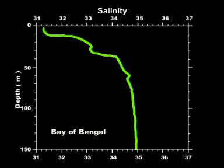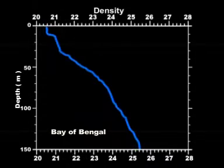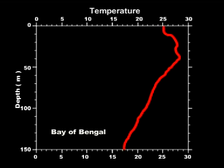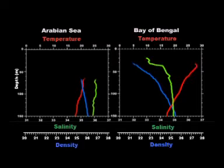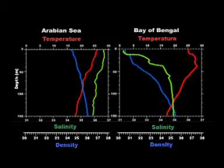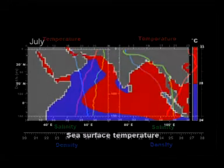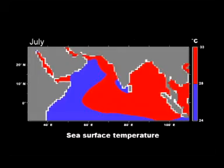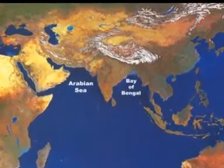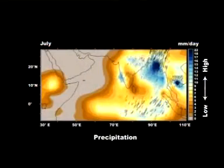This fresh water flux freshens the surface of the bay and stabilizes the water column, making it more difficult for the winds to mix the warm, stable surface layer with the cooler waters below. In the Arabian Sea, there is no such stabilizing effect, and as a consequence, the mixing with the cooler waters below is more vigorous. Since a sea surface temperature of about 28 degrees Celsius is necessary for convection to take place in the atmosphere, this condition is satisfied in the Bay of Bengal but not in much of the Arabian Sea. Thus, in spite of their geographical similarities, the two arms of the North Indian Ocean are strikingly different when it comes to climate.